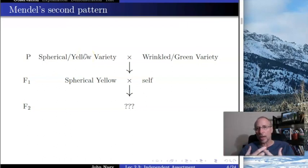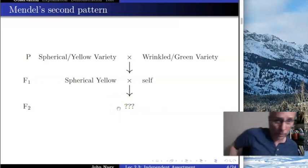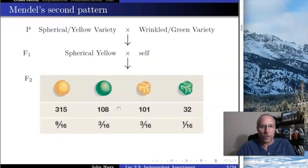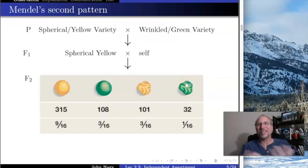His next step was to cross these F1s and see what happens. What did he see in his previous experiments? In the F2 he saw a 3-to-1 ratio. Would you predict a 3-to-1 ratio here? It's the same kind of experiment — should be a 3-to-1 ratio. Well, if he does the experiment — and this is exactly what he did — here's exactly what he got, and I'm not making these numbers up.